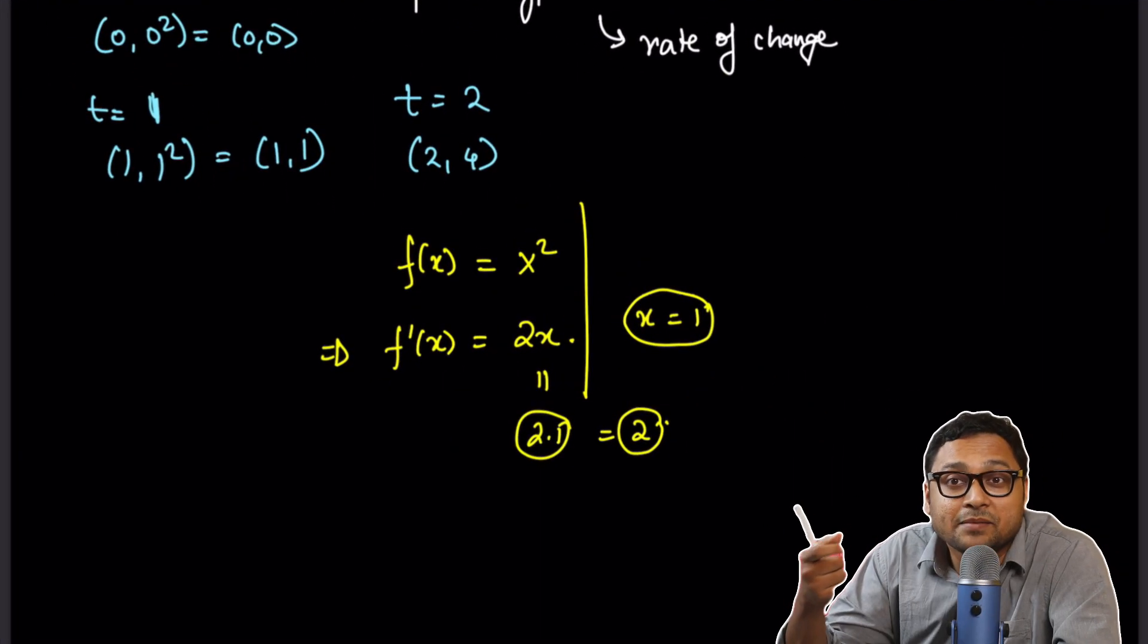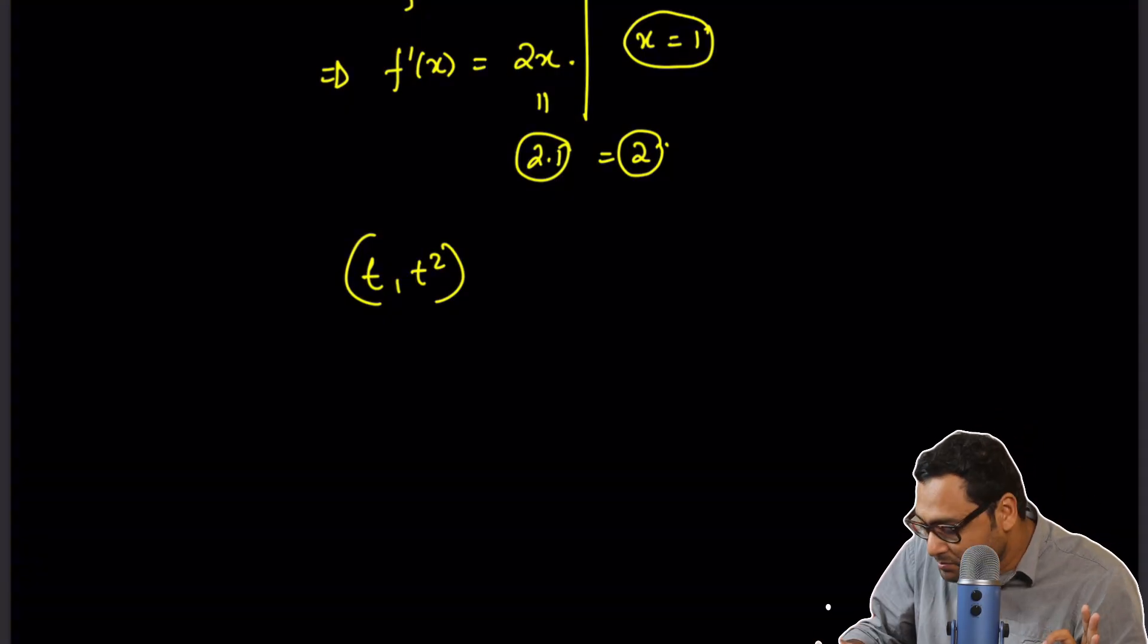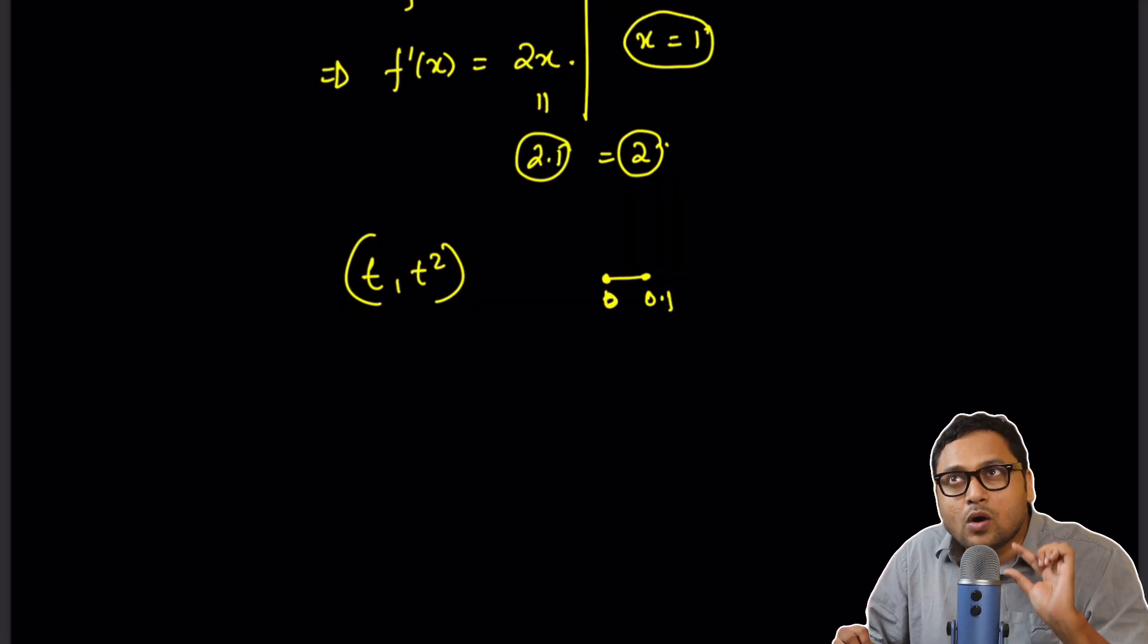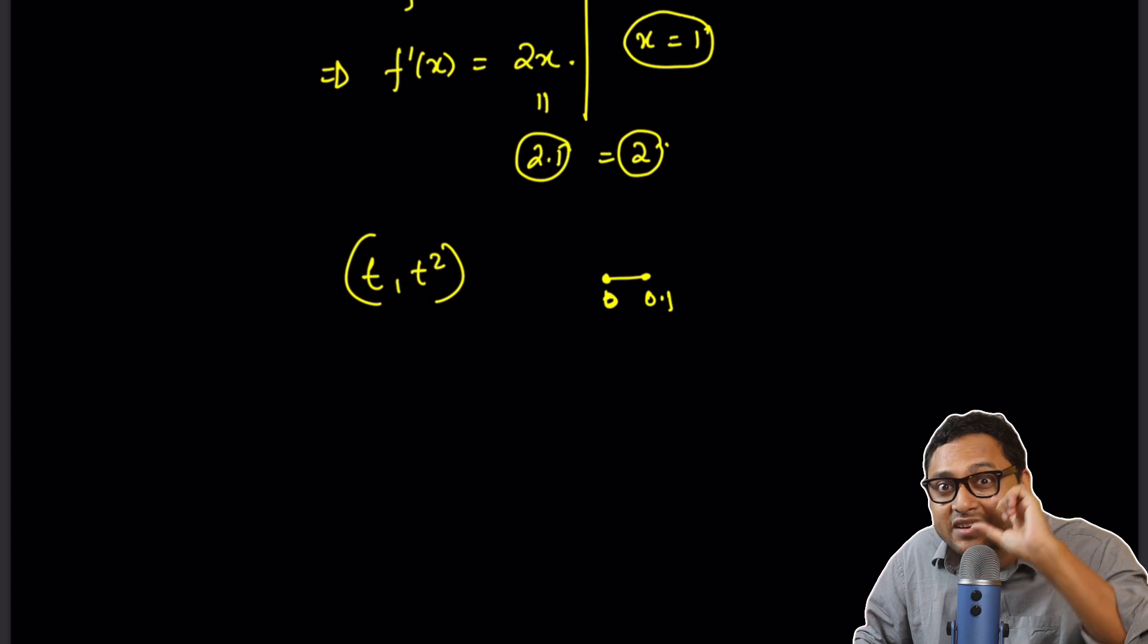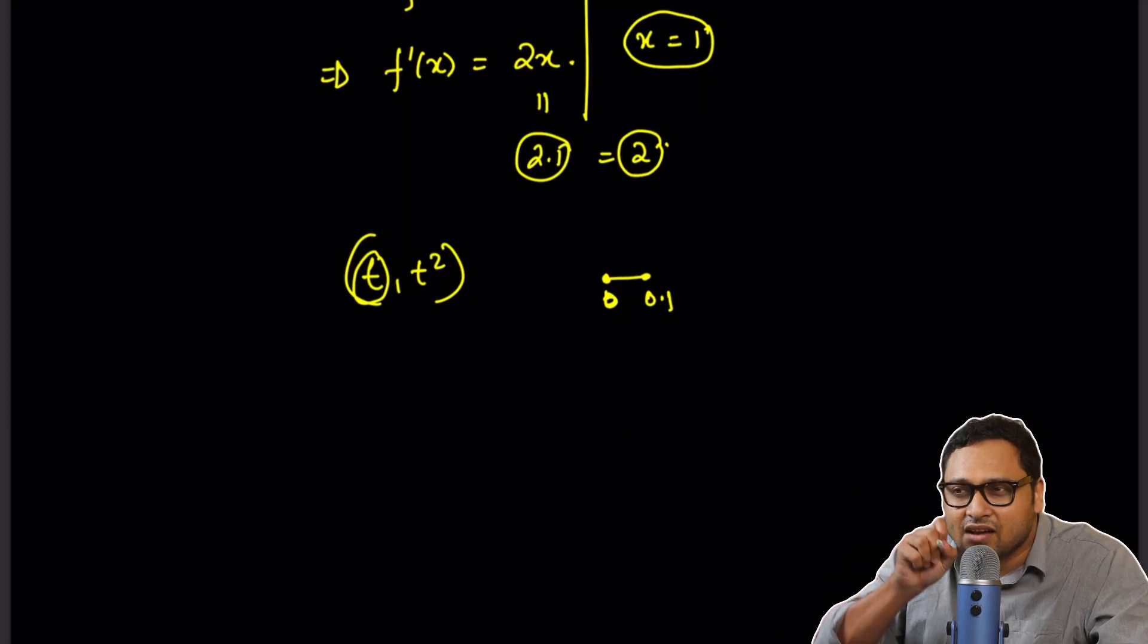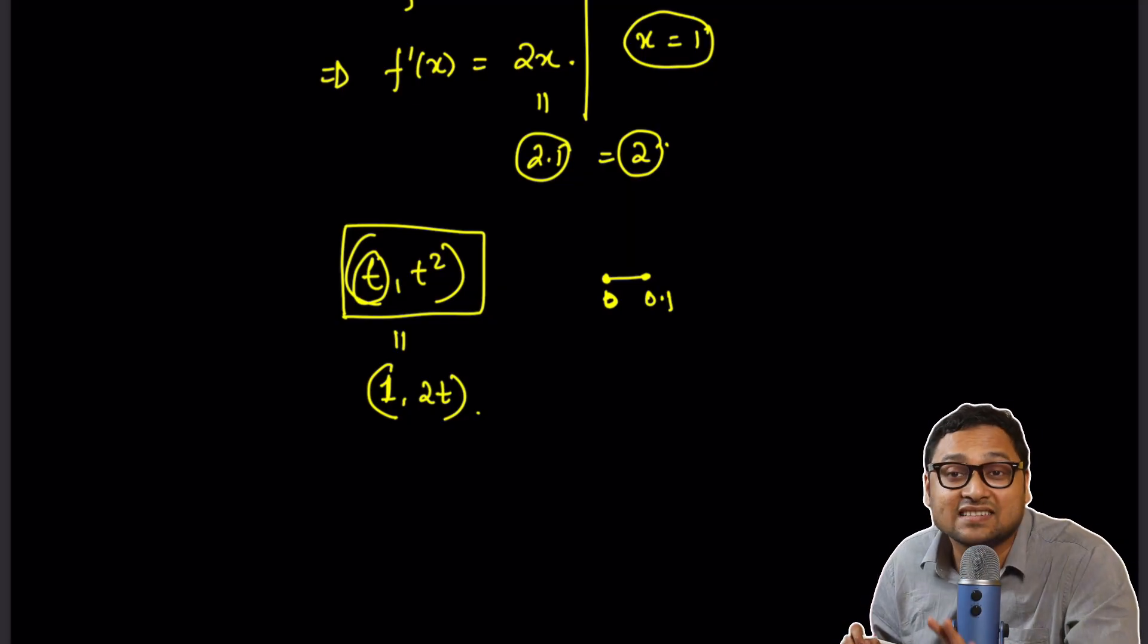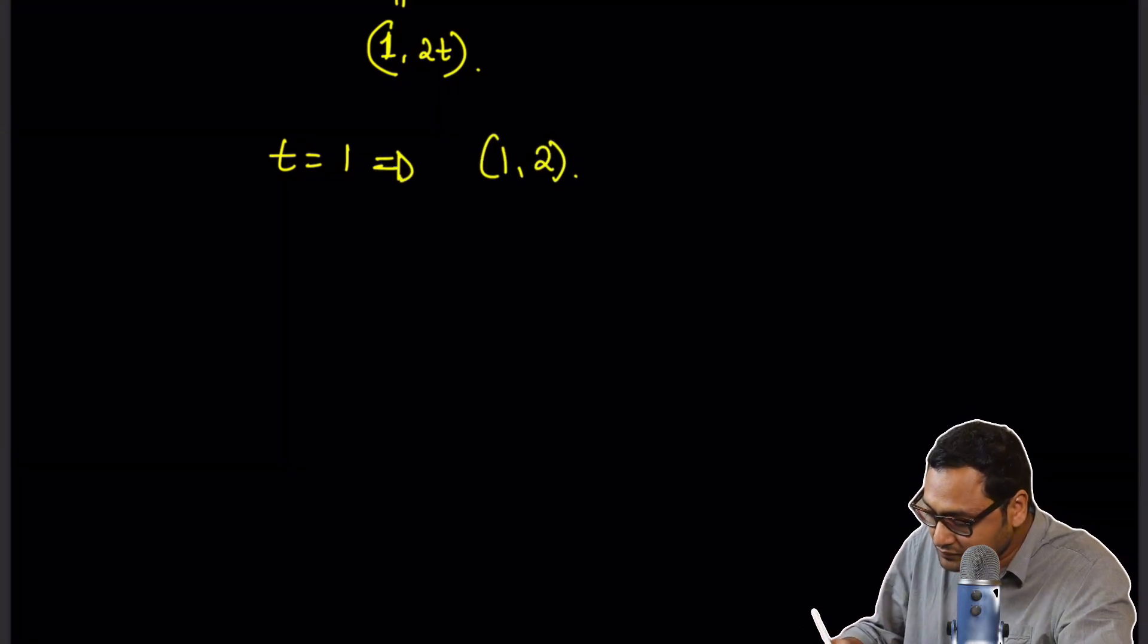What if you differentiate the parametrized form? What if you differentiate (t, t squared) with respect to t? Let's think about it. By slightly changing the value of t from, let's say, 0 to 0.1, you are figuring out the change in x coordinate as well as the y coordinate. So, you are essentially getting a vector that tells you how fast the point is changing and which direction the point is moving. So, if you differentiate (t, t squared), you will get (1, 2t) and this can be thought of as a vector. So, for example, at t equals 1, this is (1, 2).